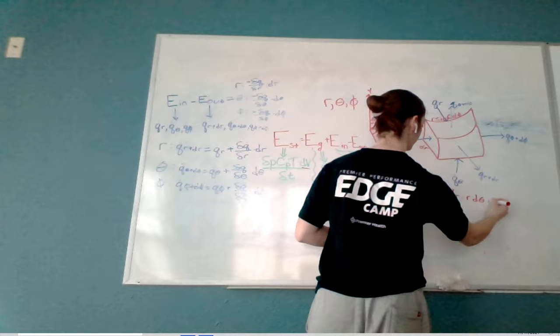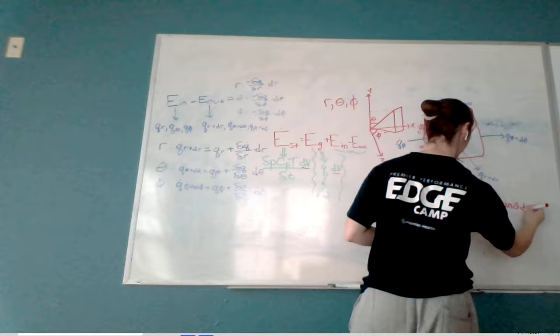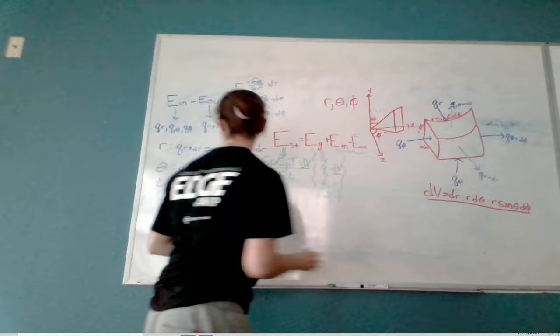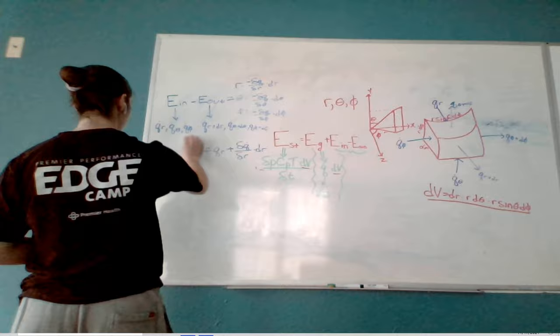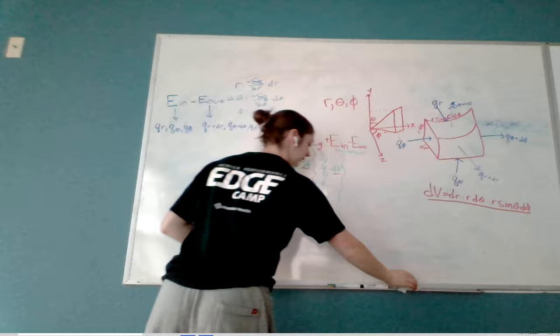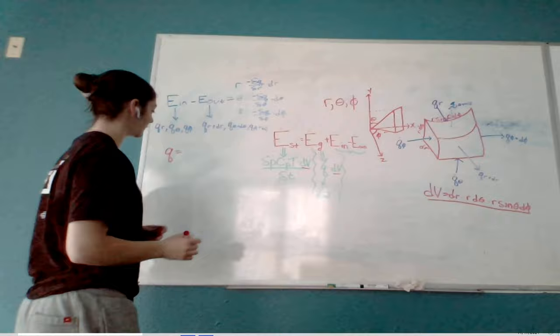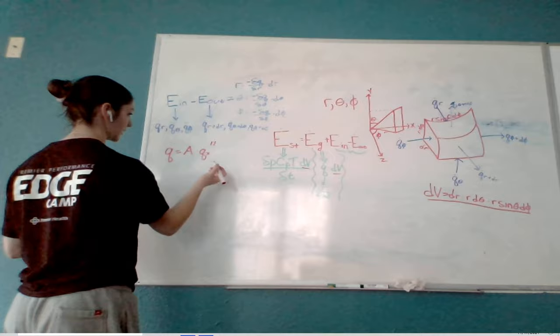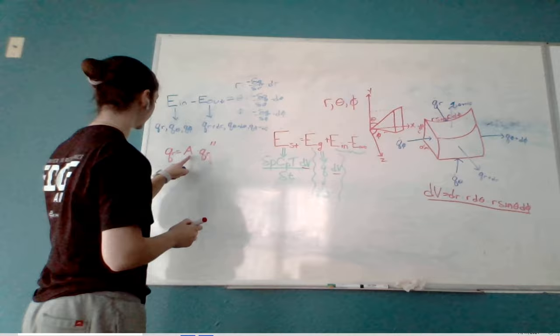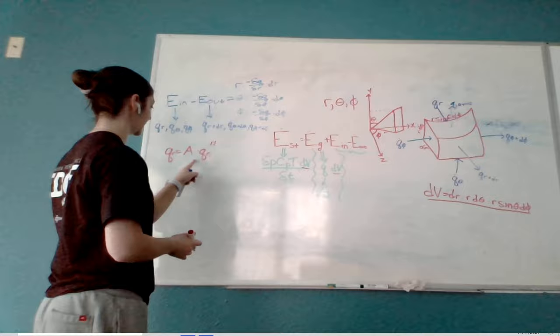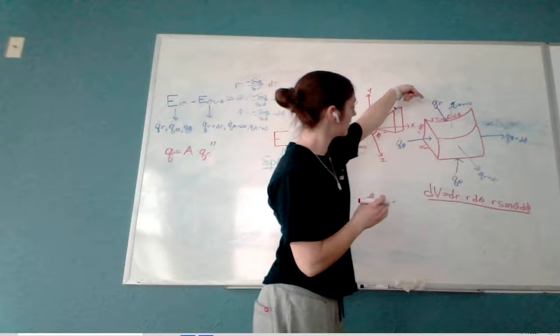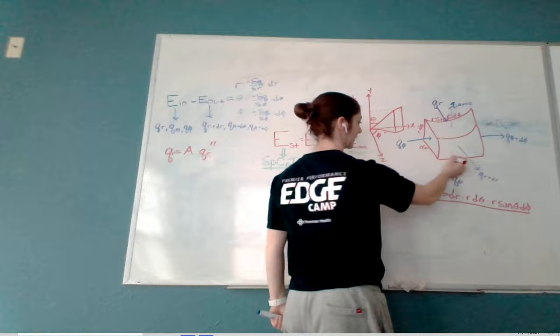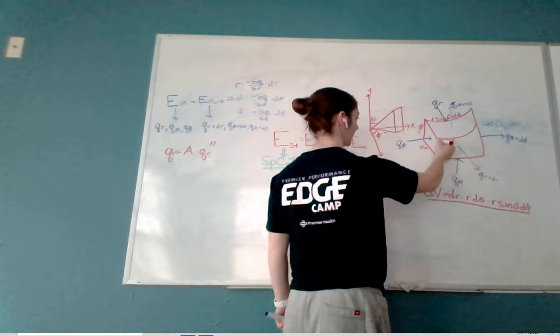We know heat flow Q equals an area times heat flux. The flux in any direction equals −k times the change in temperature divided by the change in distance in that direction. In the r direction, the area our flow passes through is r·dθ × r·sinθ·dφ. With the area planes not being simply dx·dy or dx·dz, this gets more complex — we'll represent it per direction.